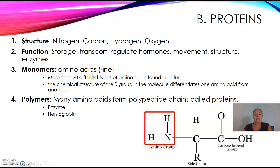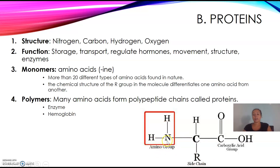The monomer is called an amino acid, and amino acids will end with -ine. So if you ever see a word like alanine, glycine, or serine, those are all amino acids — they end with -ine. There are more than 20 different types of amino acids found in nature. The chemical structure of the R group is what changes one amino acid from another. When looking at an amino acid, you'll see two hydrogens connected to the nitrogen, the carbon in the middle, hydrogen going up, your R group, a double bond with oxygen, and a hydroxide. Many amino acids form polypeptide chains called proteins. Examples of proteins include enzymes and hemoglobin, which is in your blood.